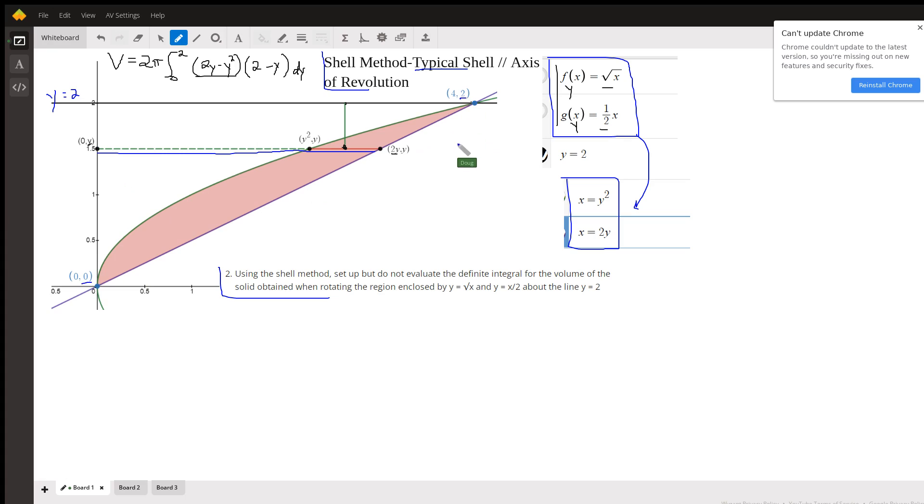That's where we're integrating. So the shell method says that to get the volume, it's two pi times the definite integral from, in this case, zero to two along the y-axis.